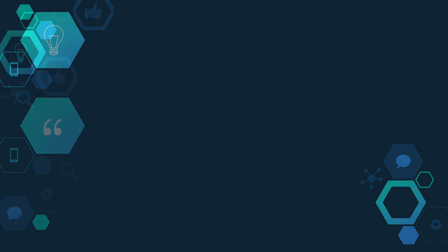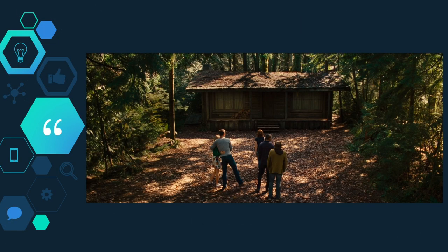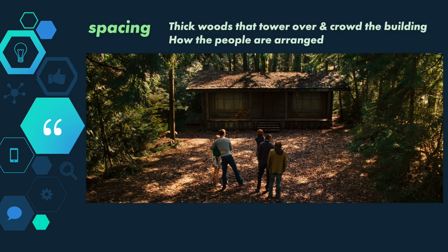Take this image for example — a screen grab from a film. Even if you don't recognize the film, I bet you can tell what genre it belongs to, because those elements of design communicate a lot of information that you're already decoding constantly. In terms of spacing, look at how thick the woods are, so dense that not much sunlight makes it to the ground. The trees tower over the building. You can infer something about the relationships between the people in the image too, because of their spacing — they're standing close, so they're probably friends, not strangers, and you can likely guess that the two who are embracing are a couple.